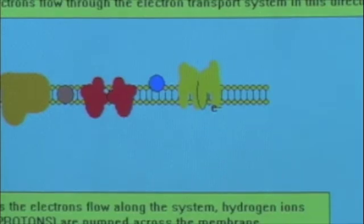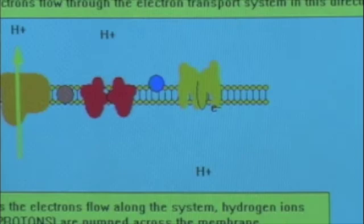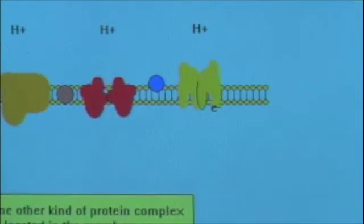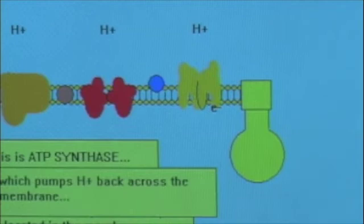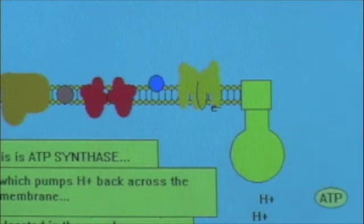And as they do that, protons, hydrogen ions, are pumped from one side of the membrane to the other. Now there's one other protein complex in the membrane, and that's this, ATP synthase. What this complicated molecule does is pump the hydrogen back through to the other side of the membrane, and in so doing provides energy to generate ATP.